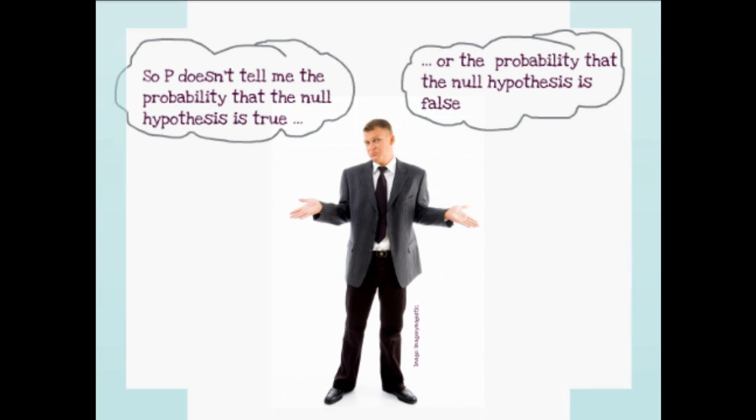The p-value doesn't tell us directly about the plausibility of the pessimist view of the world. We don't know if this view is right or wrong. It gives us an idea of the plausibility of the data we have sampled, given that view.